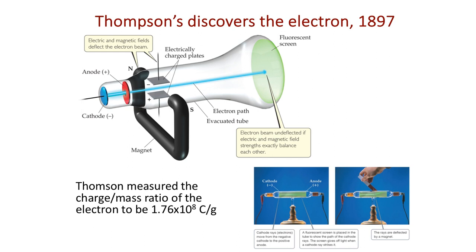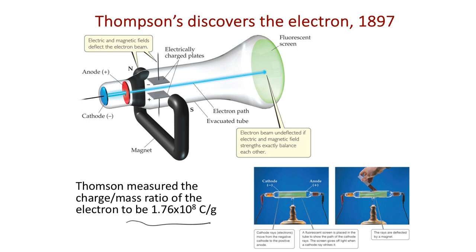This experiment measured the charge-to-mass ratio of the electron — one of the key details it determined. It's often credited with the discovery of the electron, and it determined the mass-to-charge ratio, but not necessarily the mass itself of the electron. The mass of the electron would come from a second experiment: the Millikan oil drop experiment.